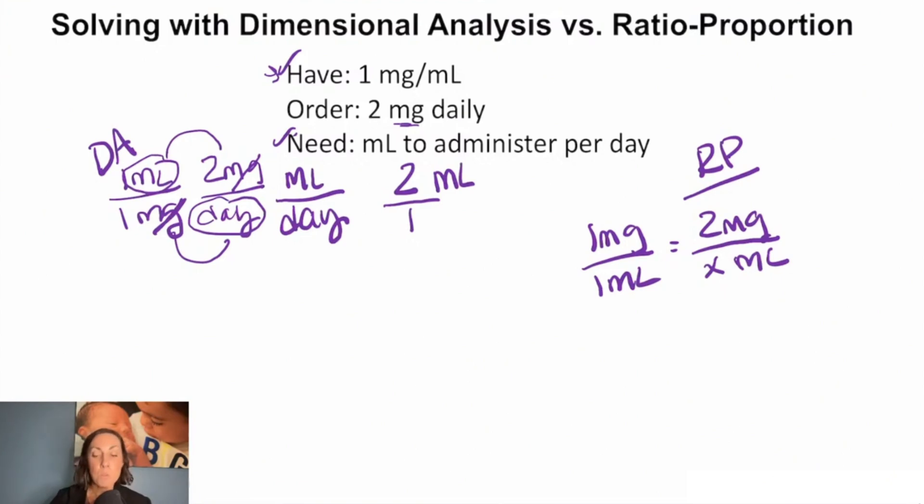So remember those rules. We have to make sure our numerators and our denominators match. So we have milligrams on the top, we have milliliters on the bottom. So now we can cross multiply and solve for X. So when we cross multiply here, we get our one X equals two. And of course, we have to divide by one to get X alone. So we see that we're going to be giving X equals two mLs.